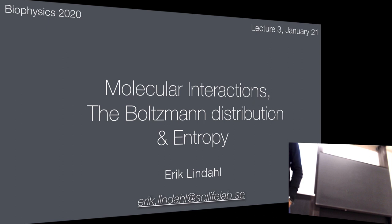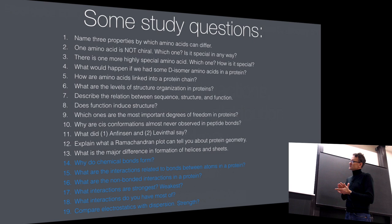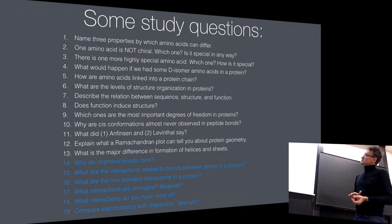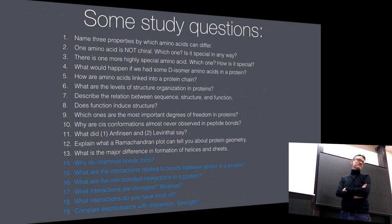Today we're going to talk about the Boltzmann distribution, but before we get to that, I'm going to go through some of the study questions from last week and finish off with the interactions we didn't have time for. So as a Tuesday morning exercise, I would suggest we jump straight into some of these questions. I spoke a lot about amino acids when I introduced the molecular structure last week — can you come up with three ways or three properties by which you can classify amino acids?